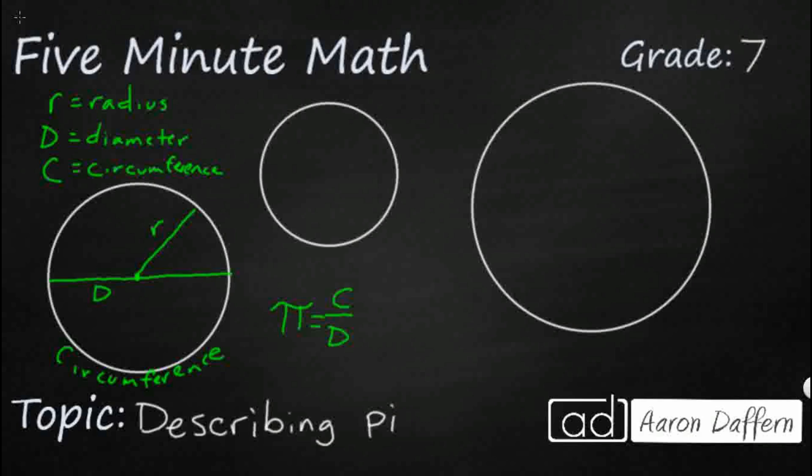So for example, if we take this little circle right here, and we say we have a diameter of, let's call it 22 centimeters. So that's our D. D equals 22 centimeters.